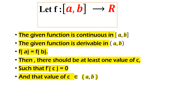Second condition: the given function has to be derivable — that is, differentiable — in the open interval (a, b). Third postulate of Rolle's theorem is that f(a) has to be equal to f(b). You will be given the values of a and b in the question. Put the value of a in place of x and the value of b in place of x, find out these two values — they have to be equal. Then there should be at least one value of c such that f'(c) is equal to 0.